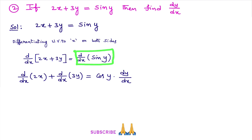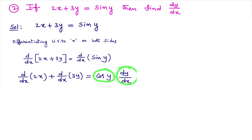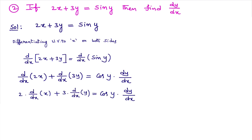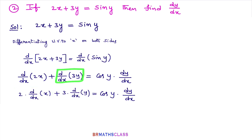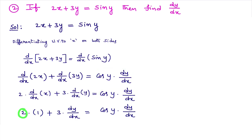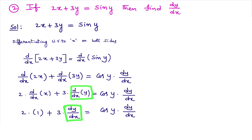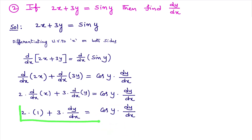Further simplifying: d/dx of 2x = 2 × (d/dx of x) = 2 × 1 = 2. Similarly, d/dx of 3y = 3 × d/dx of y = 3 × dy/dx. And cos y × dy/dx is written as it is from the above step. At this point, differentiation is over. Once differentiation is over, we write all dy/dx terms at one side, remaining all terms the other side.